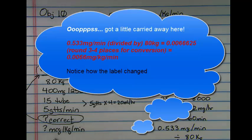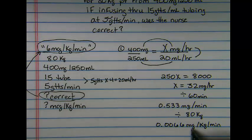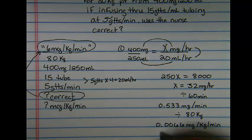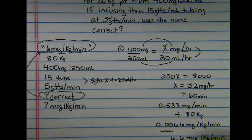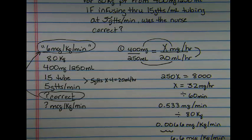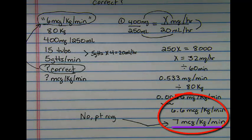And so my last thing that I will have to do to convert is to move my milligram to my microgram. When I do that by going over one to three decimal places, that leaves me with 6.6 micrograms per kilogram per minute, which is going to round to 7. So in truth, my answer was no, the patient's receiving 7 micrograms per kilogram per minute.